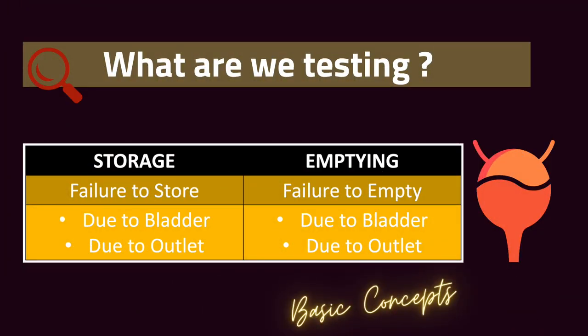The second question is: what are we testing? The lower urinary tract — bladder plus urethra — has only two functions: to store urine and to timely empty it. Problems occur only in two situations: when it fails to store correctly or fails to empty properly. Failure of storage or emptying can be due to the bladder or its outlet.